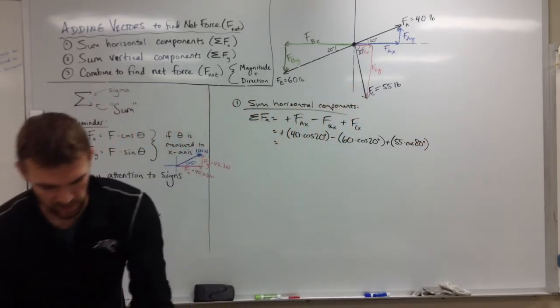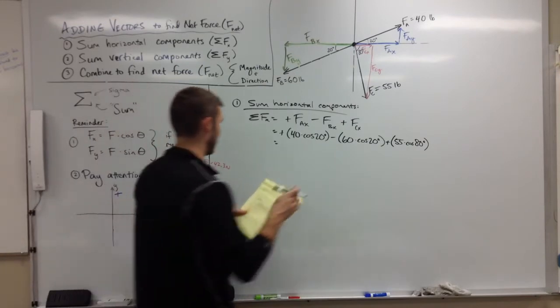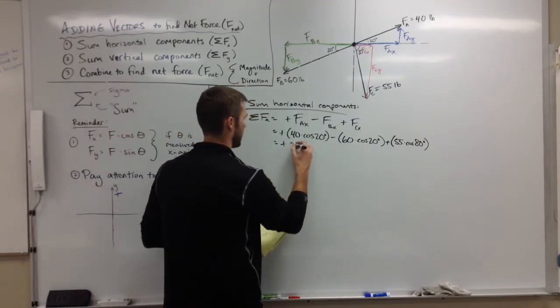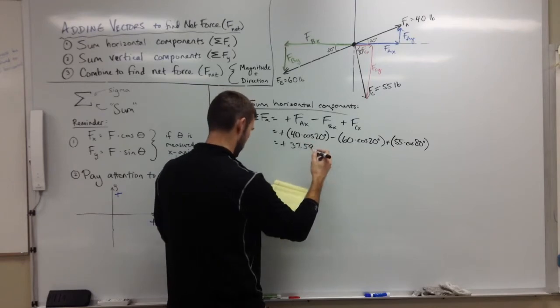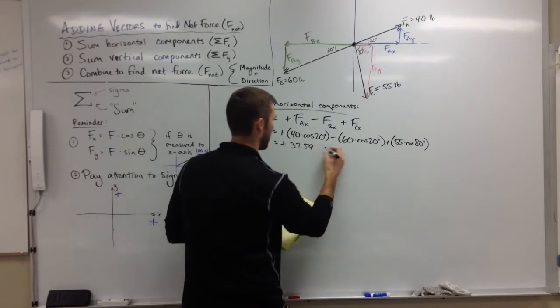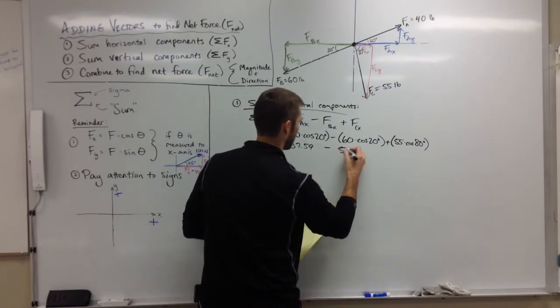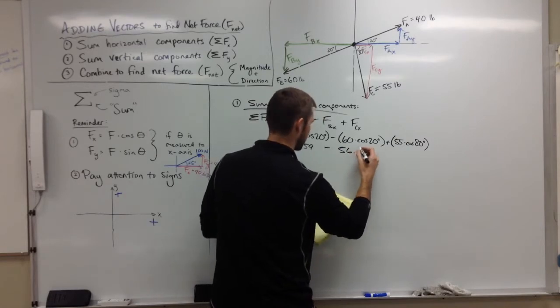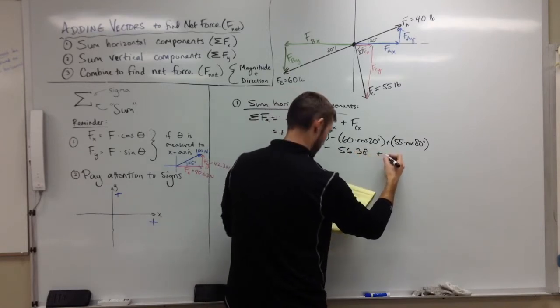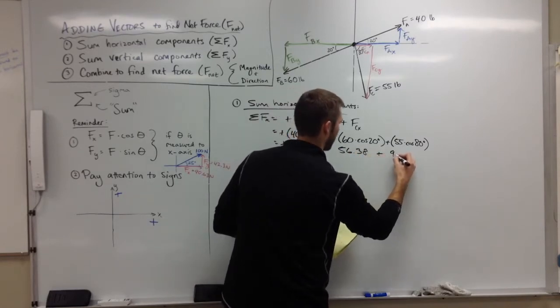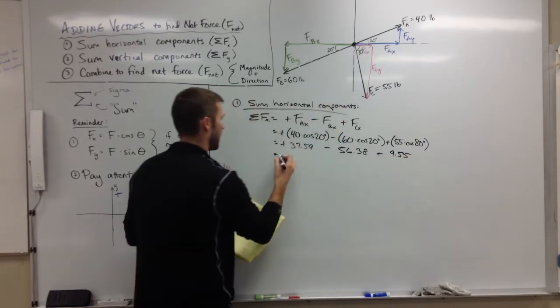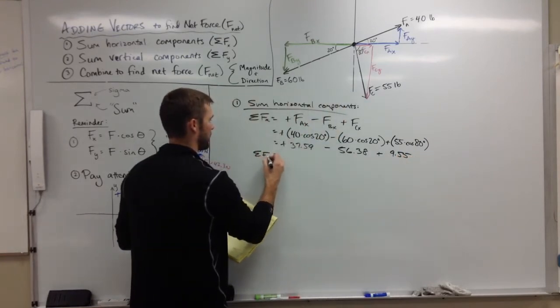Plugging those into our calculator, I'm just going to write down so you can check your own work as you do this. And I would suggest that you do in fact try that, just to make sure not to make an error. Make sure not in radians - you want to make sure you're in degrees here. And that's 9.55. Add all those up and you get an overall sum of the force in the x direction of negative 9.24 pounds.